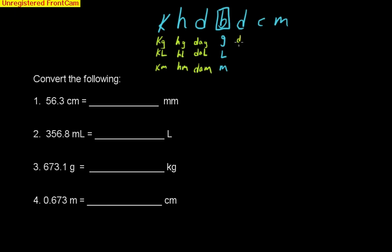Deci would just be dg, dl, or dm. This could be centigrams, centiliters, or centimeters. And finally, we can have milligrams, this is a thousand times smaller, milliliters, or millimeters.